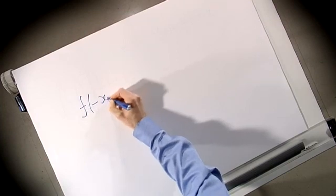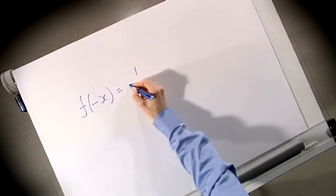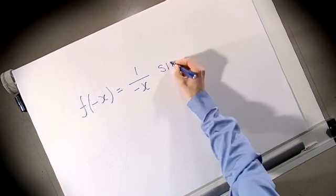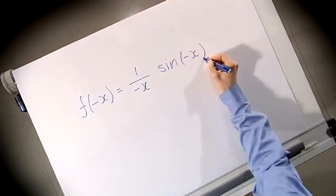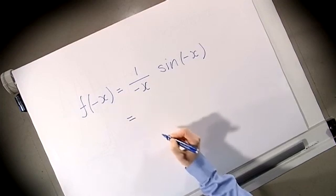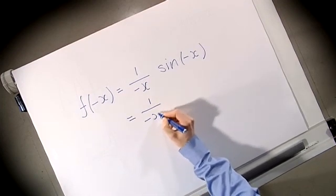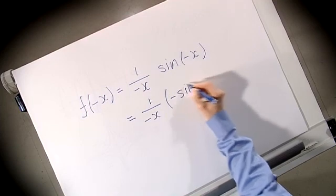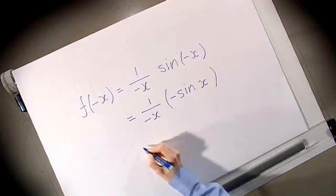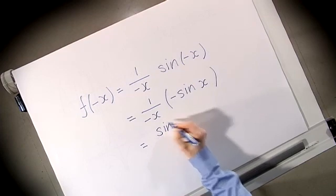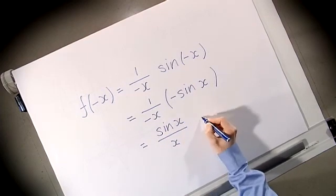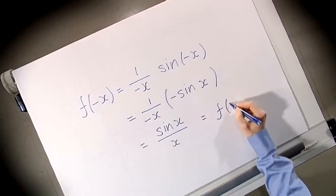Let's look at any symmetries the function f(x) might have. If we look at f(-x), that's (1/(-x))·sin(-x). We know that sin(-x) = -sin(x), so this simplifies to sin(x)/x, which is f(x). So f(-x) = f(x) and the function is even.